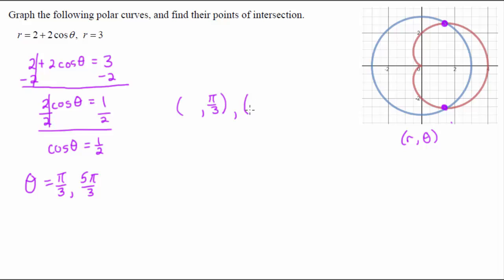Now we need to figure out what r values go with these. Depending on what our initial equations are, this can be easy or tough. Since we already know that r equals 3, because that's one of our equations, both of these r values have to be 3.